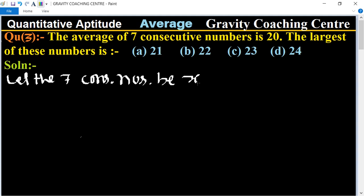Suppose the first one is x, and the second one x+1, and third one x+2, and fourth one is x+3, and fifth one is x+4, and sixth one is x+5, and seventh one is x+6.